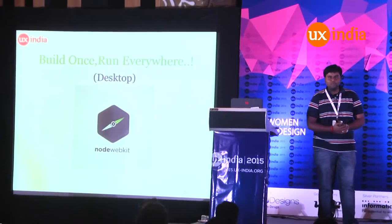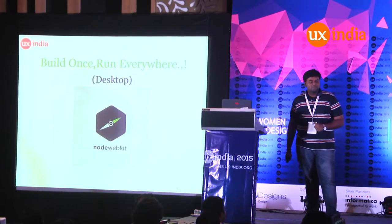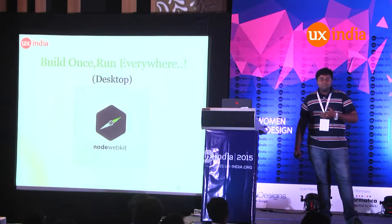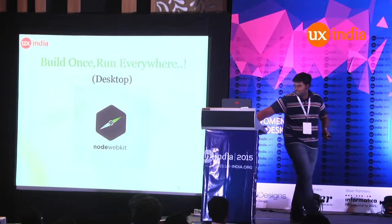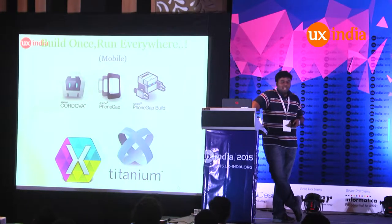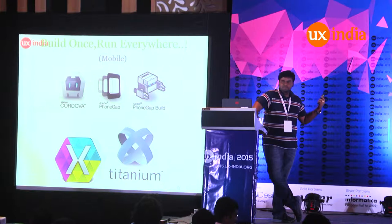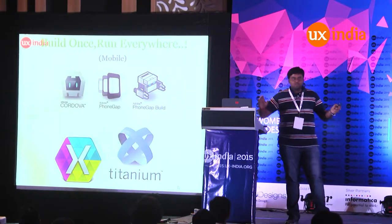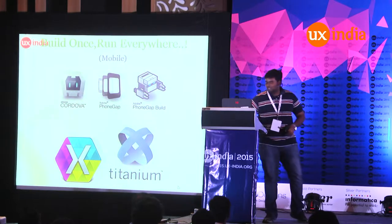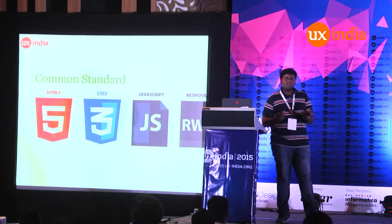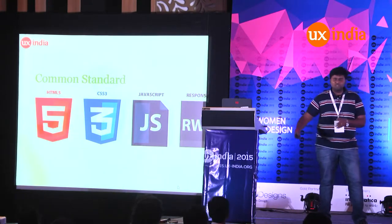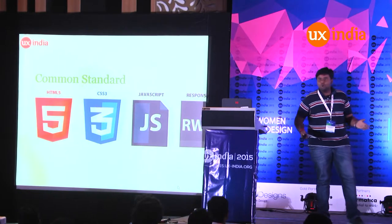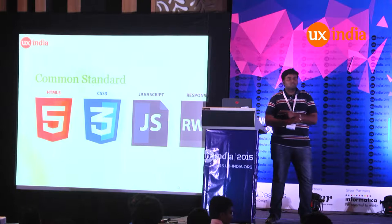Let's see a few of the environments and frameworks available for building a native hybrid app. For desktop, we have something called Node WebKit — using this you can build hybrid apps for desktop and OS X. On mobile, we have multiple options: PhoneGap is the popularly known one. There's also Xamarin and Titanium, which are compiled code frameworks. Consider: I have a code base built using HTML, CSS, and JavaScript — with responsive design — and I could cover all platforms, starting from desktop to mobiles. How awesome is that, and your development time is cut down enormously.